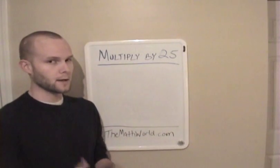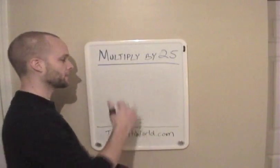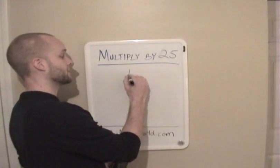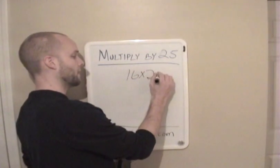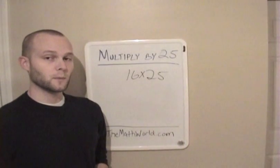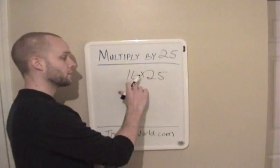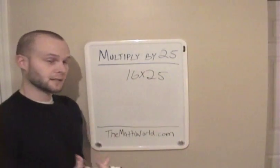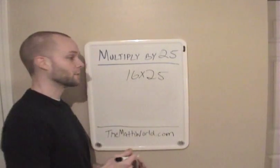So we're going to start out small and work our way up and see if you guys can figure it out. So first one we're going to do is 16 times 25. And the first thing you want to do anytime you multiply by 25 is you want to take the number you're multiplying by, which in this case is 16, and you want to divide that number by 4.